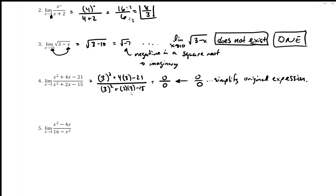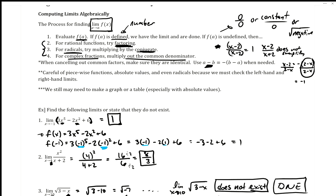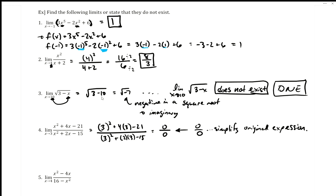Welcome to our video on evaluating limits with rational functions. The first step is to always plug in the value, like in problems one, two, and three. If we get something strange, like in number three, it does not exist. But like in number four, if we get a zero over zero when we try to plug in the value, that means we usually need to simplify the original expression first.